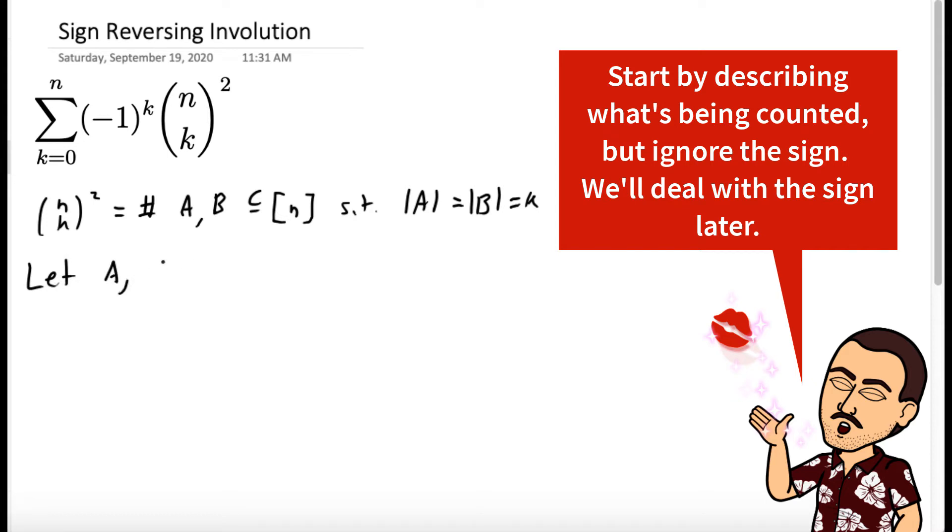Let's let A and B be two subsets that satisfy this property. So we'll let A and B be subsets of the numbers 1 through n with the size of A equal to the size of B equal to k for some fixed k.